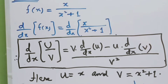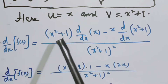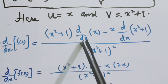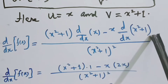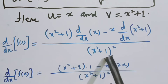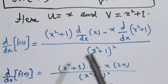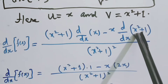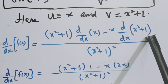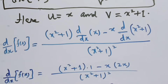Here u = x and v = x² + 1. Applying the formula: (x² + 1) times the derivative of x, minus x times the derivative of (x² + 1), all divided by (x² + 1)². The derivative of x is 1, the derivative of x² is 2x, and the derivative of the constant 1 is 0.